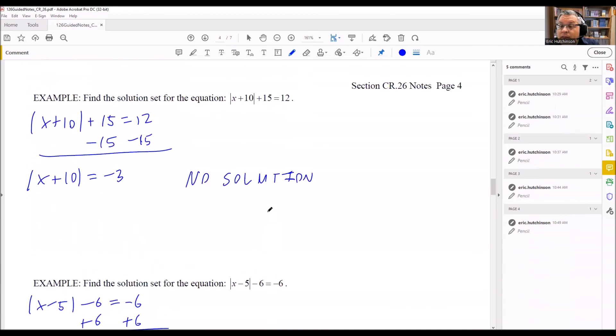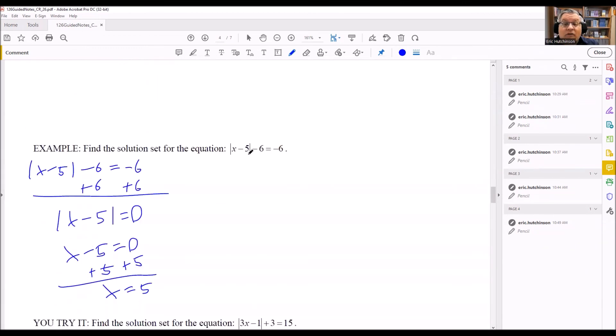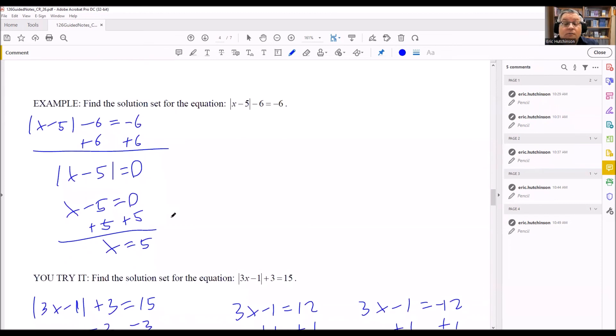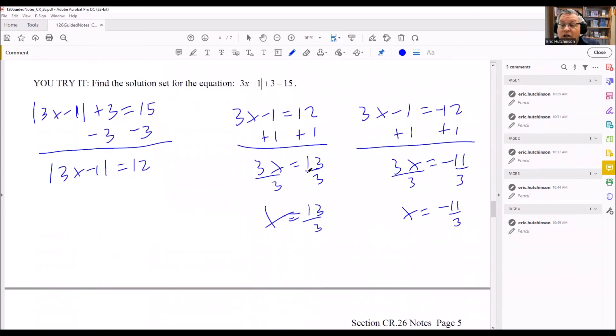So again, just to review that, if you have an absolute value equal to a negative number, no solution. If you have an absolute value equal to 0, it's one solution. And if you have an absolute value that's equal to a positive number, then you're going to have two solutions.